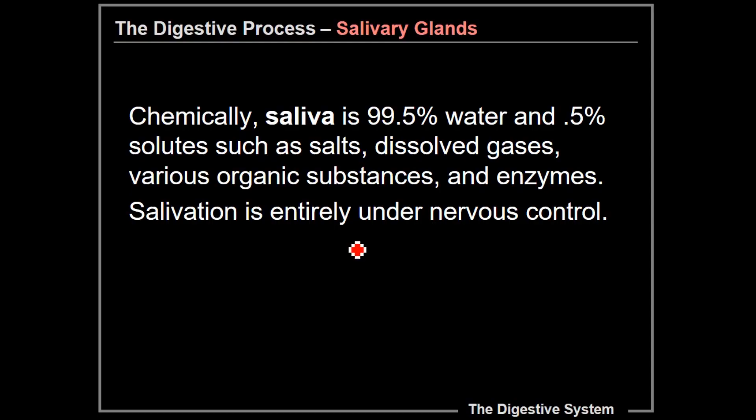Now, chemically, saliva is 99.5% water. So basically, your saliva is almost all water. Only half of a percent are solutes — stuff that is dissolved in a solution. So in this case, the solution of saliva is 99.5% water and the remaining half percent are the salts, dissolved gases, various organic substances, and enzymes that are in your saliva.